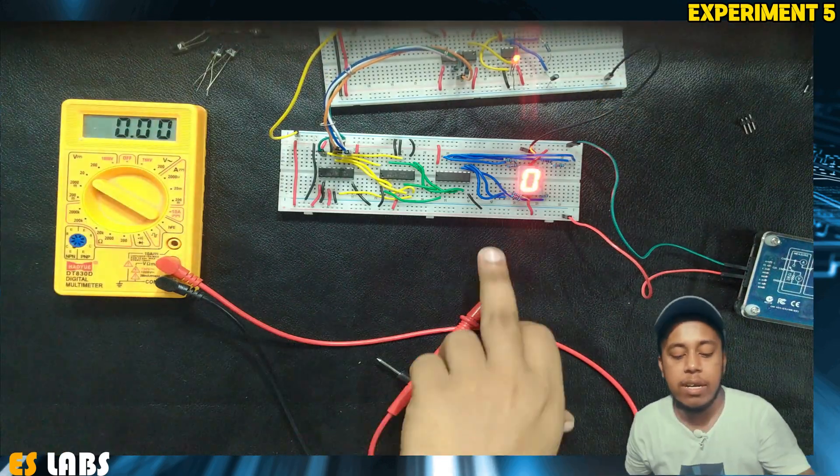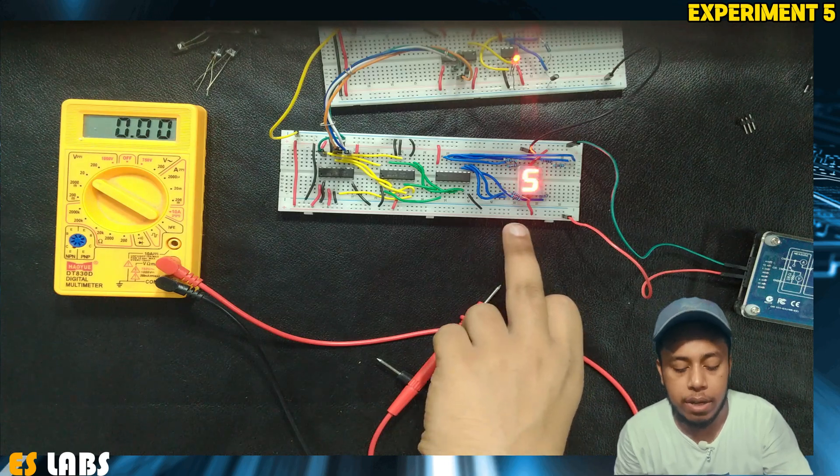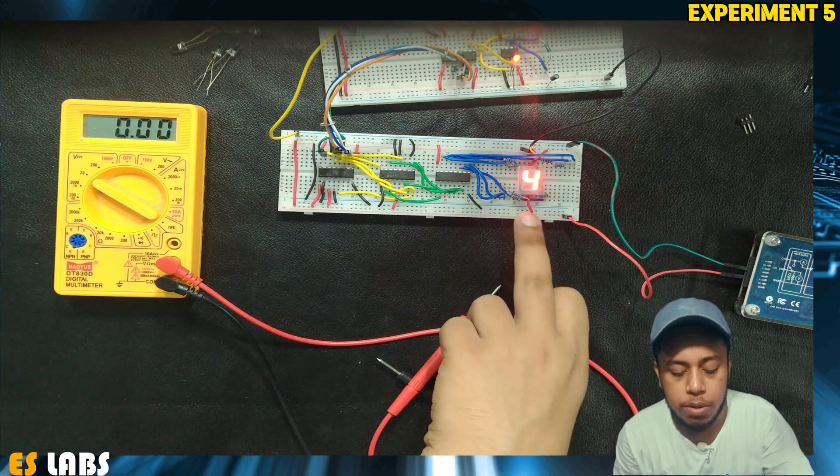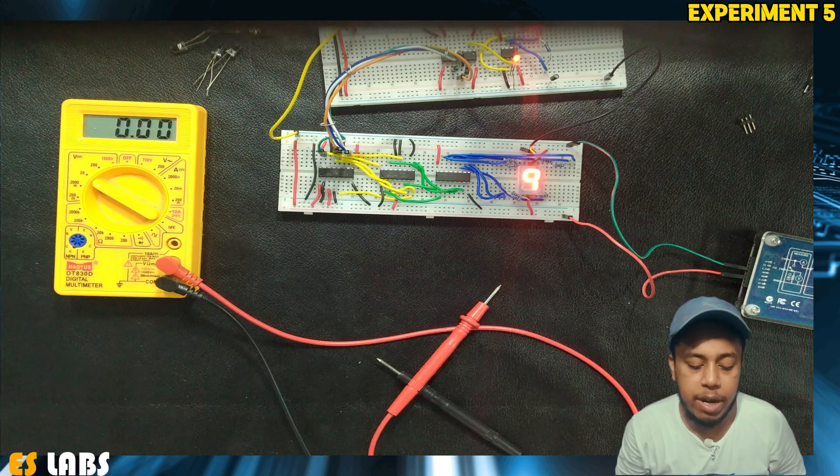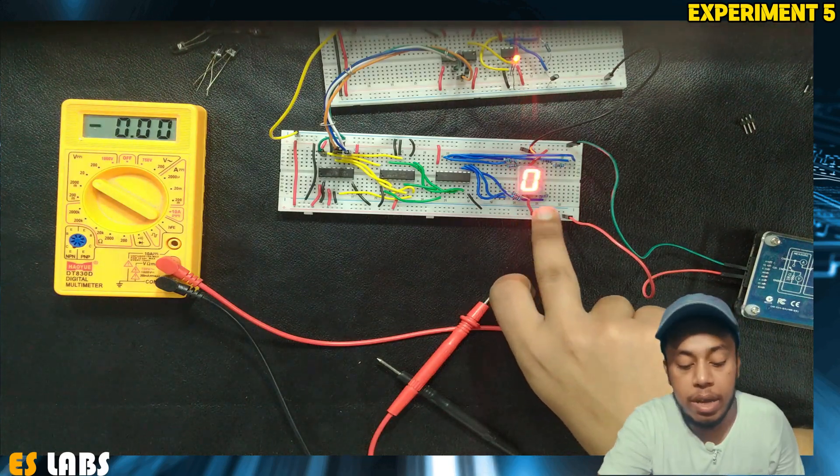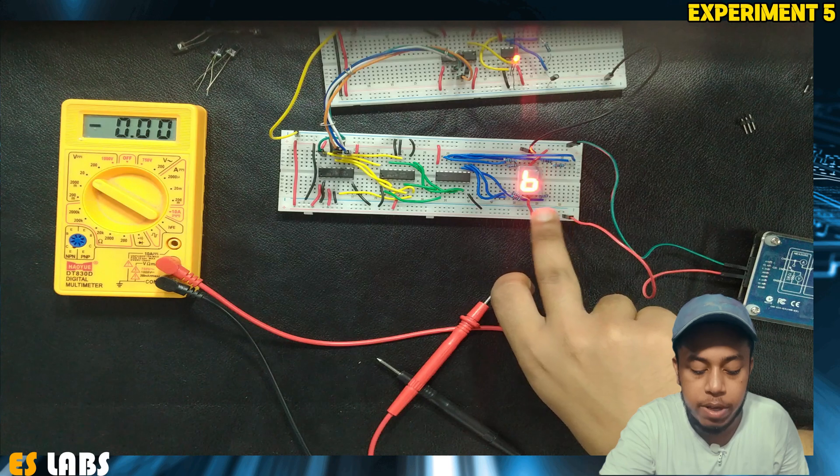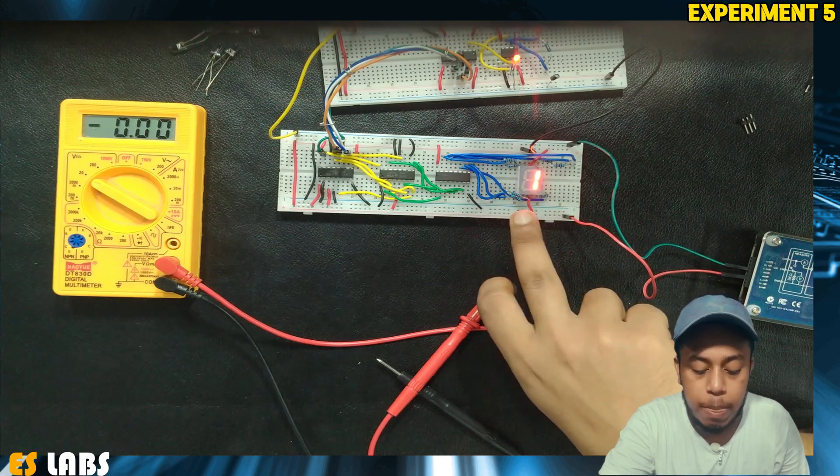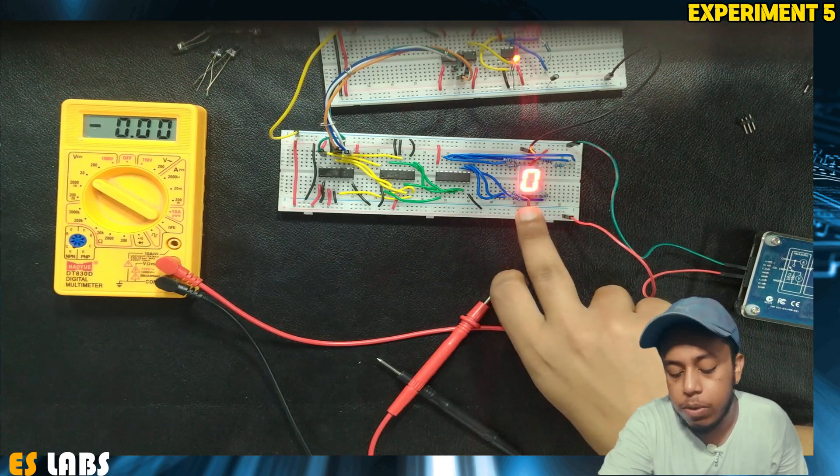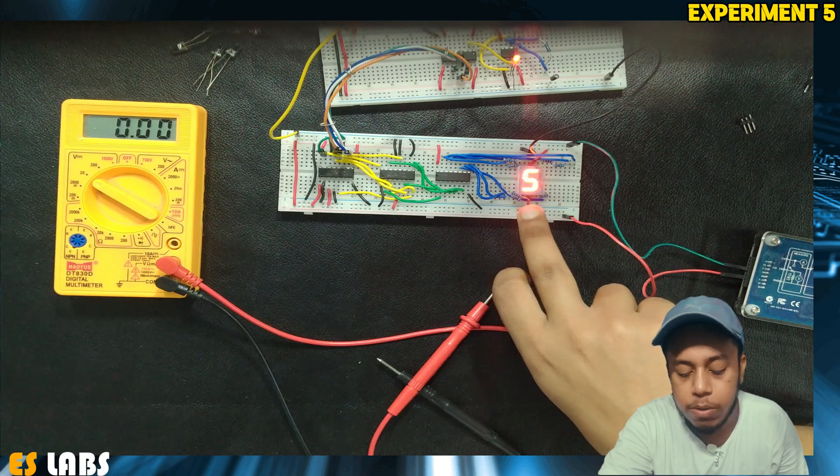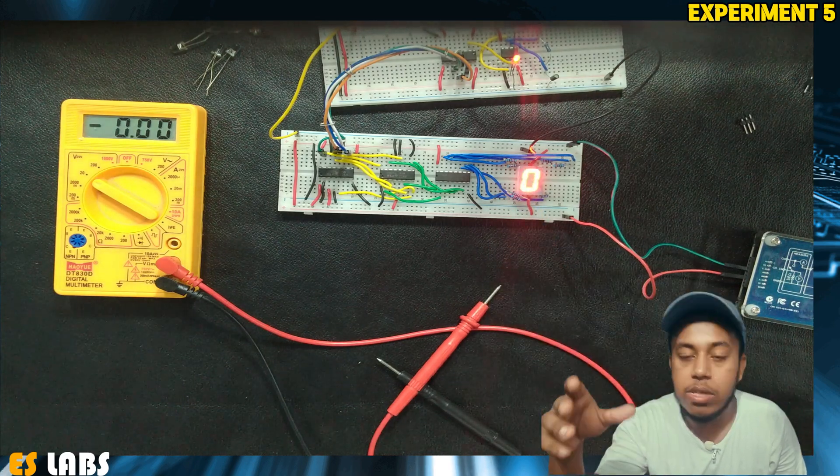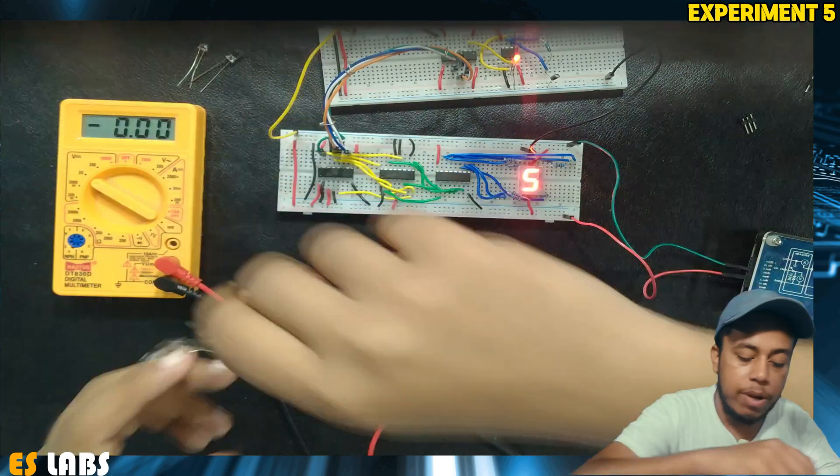We can see that it is now counting from 0, 1, 2, 3, 4, 5, 6, 7, 8, 9, then 10. This is only representing the LSB. It's counting 0, 1, 2, 3, 4, 5, 6. We can also connect LEDs here.